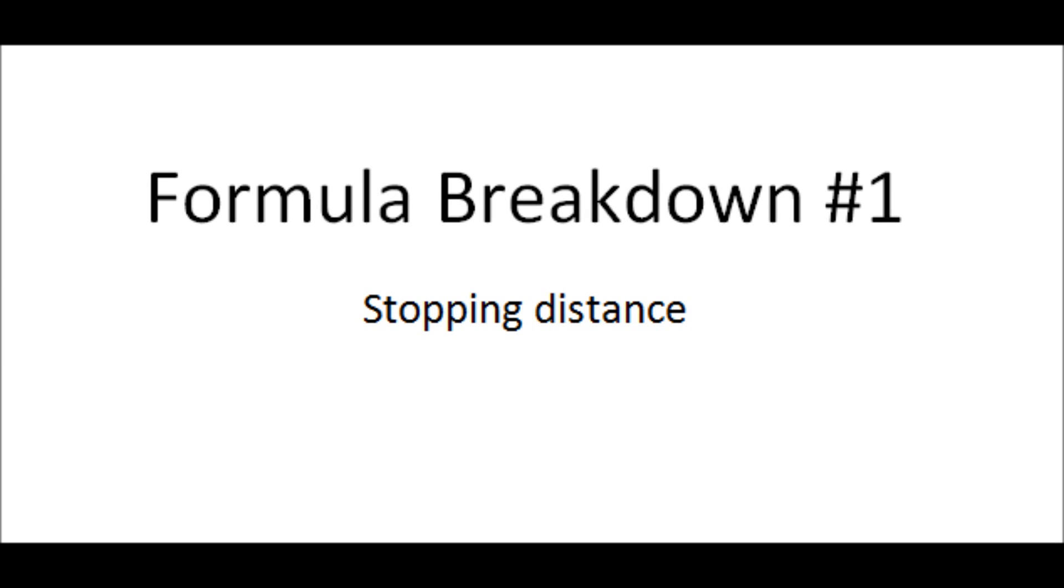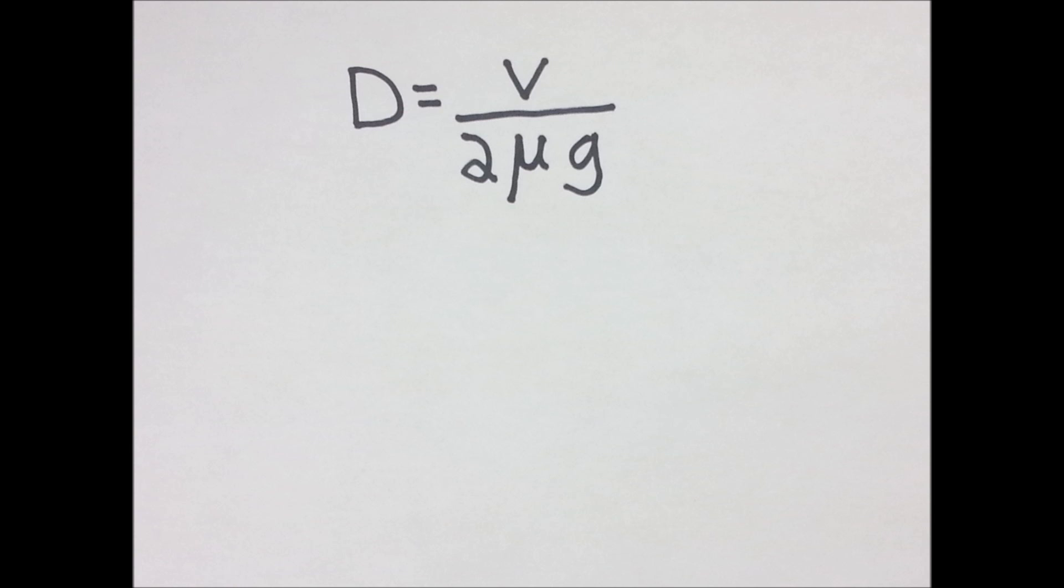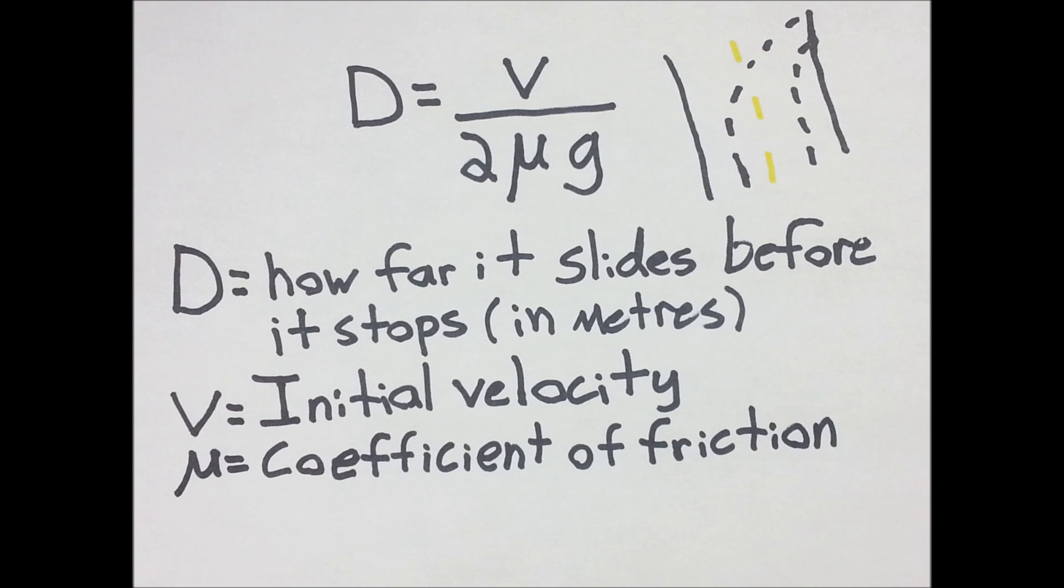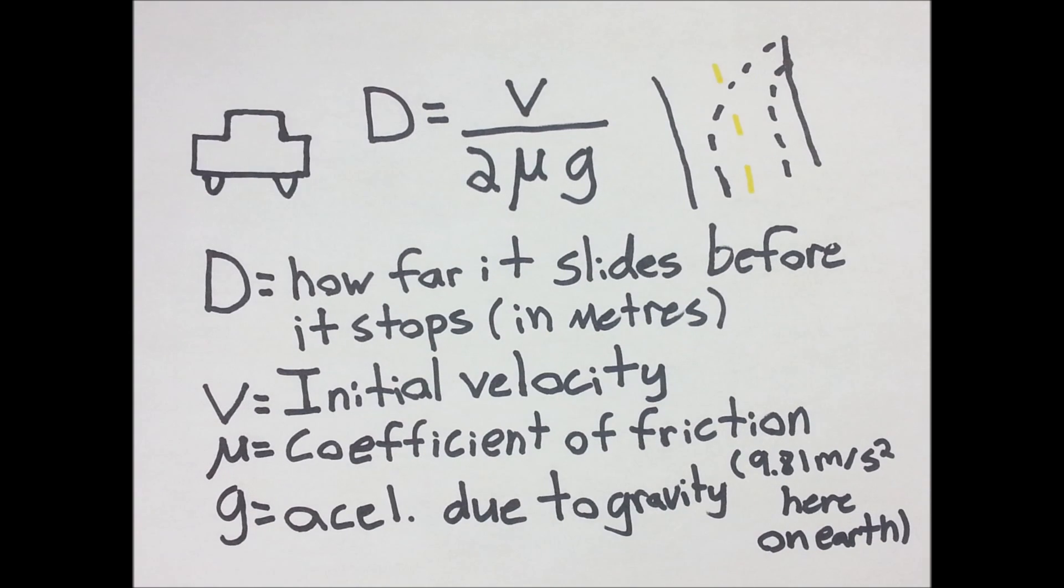Let's look at the components. D is the distance in meters. V is the velocity in meters per second of the car or object. μ is the coefficient of friction, which can be found online. And g is the acceleration force due to gravity.